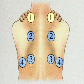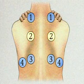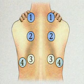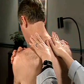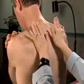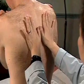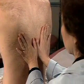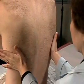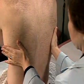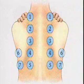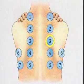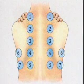Next, using a systematic pattern, palpate for tactile fremitus. Ask the patient to say '99' when you place your hand down. Using the balls of your hands, palpate and compare symmetrical areas for tactile fremitus as the patient repeats '99', identifying areas of increased, decreased, or absent fremitus.